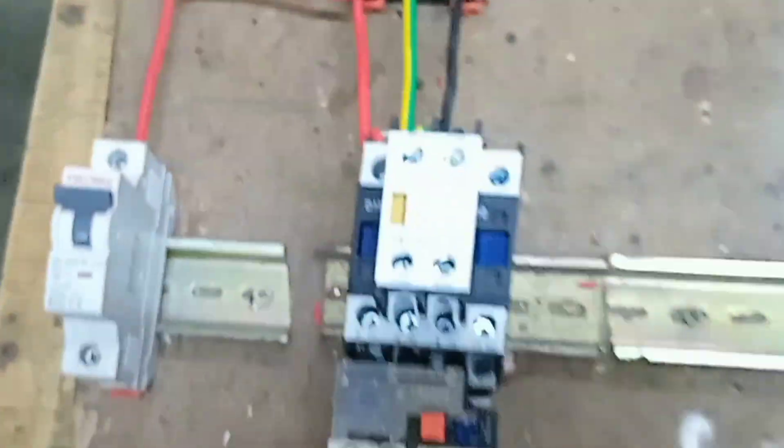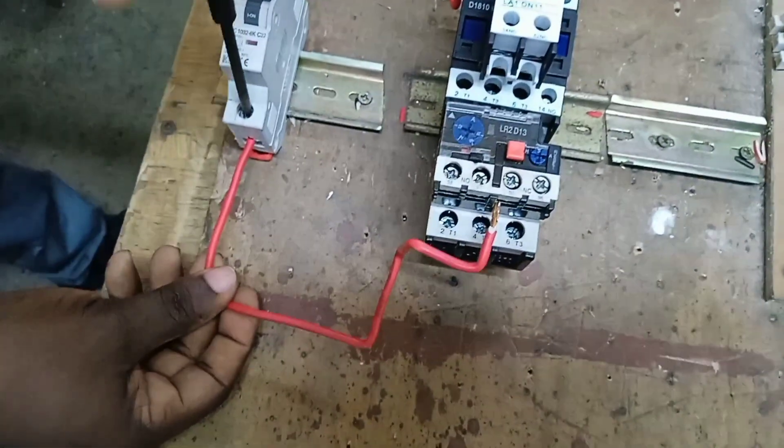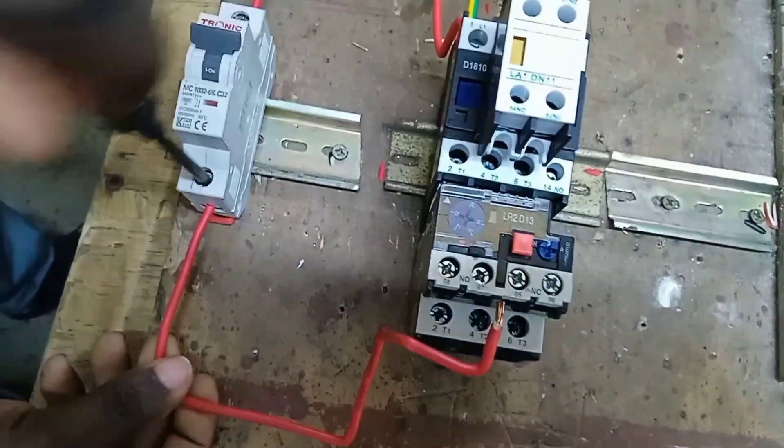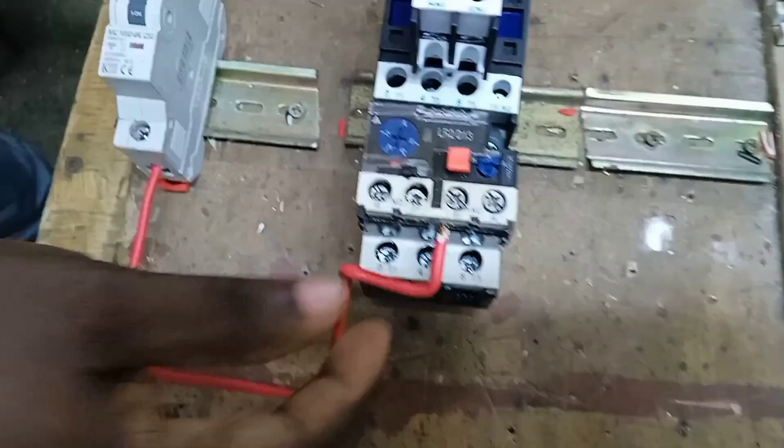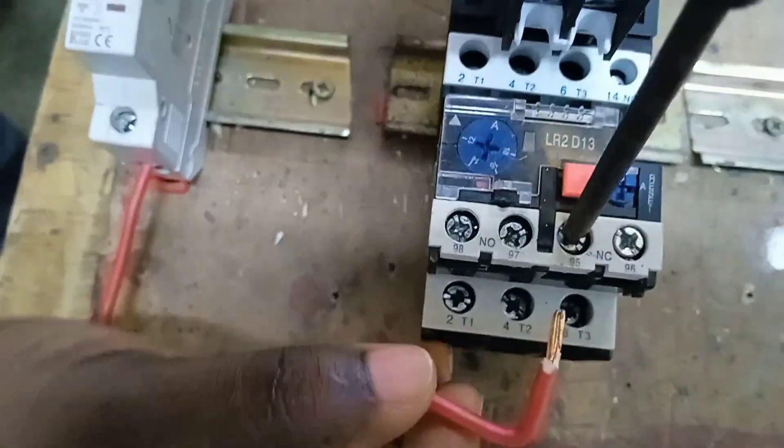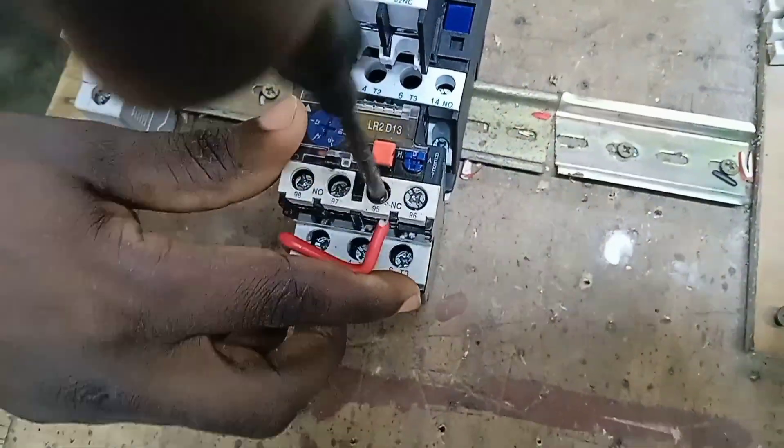From the output of the single-pole MCB, we connect this cable and then connect it to terminal 95 of the overload relay. Here, terminal 95. We connect the cable to terminal 95 here of the overload relay.